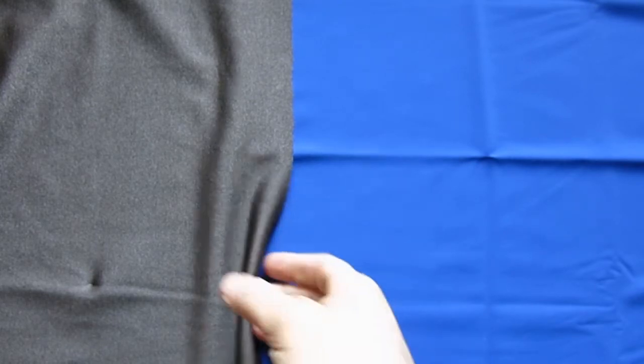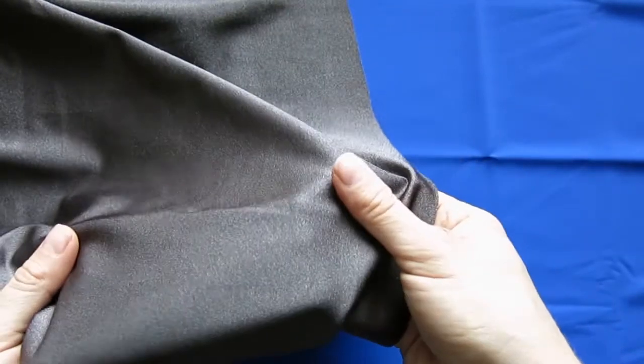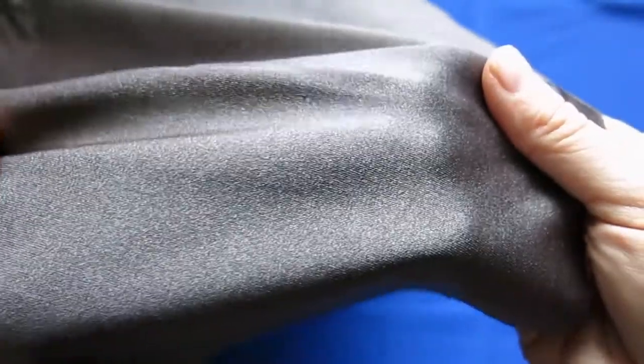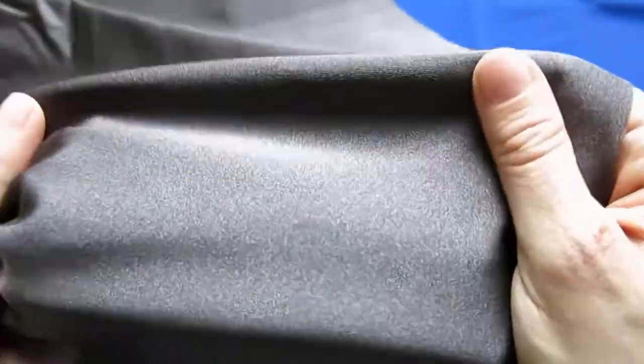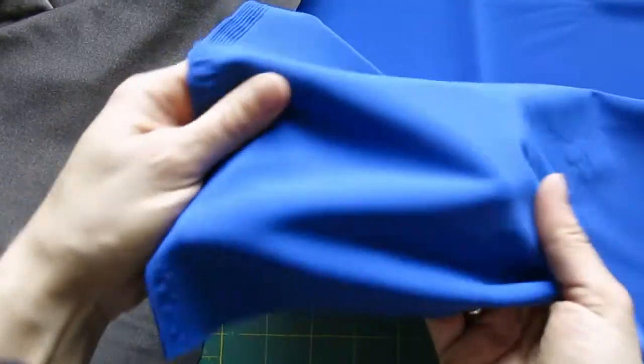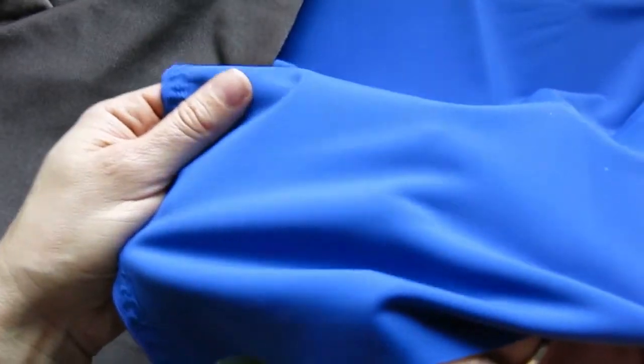Milliskin is a nylon spandex fabric and it comes in both shiny and matte versions. You can see on the left here this gray fabric—this is the shiny version. The surface of the fabric has this really nice sheen, and this blue is the matte version where the surface is much more dull.